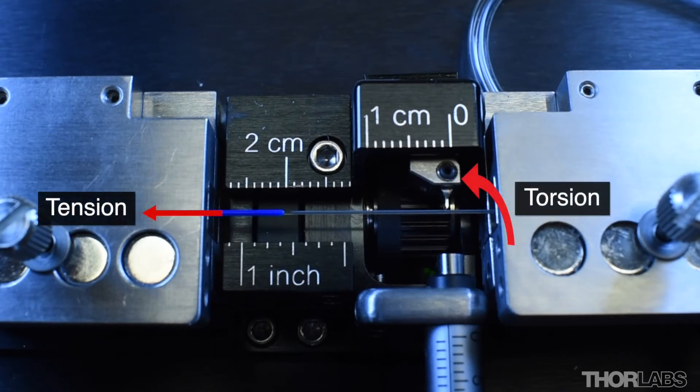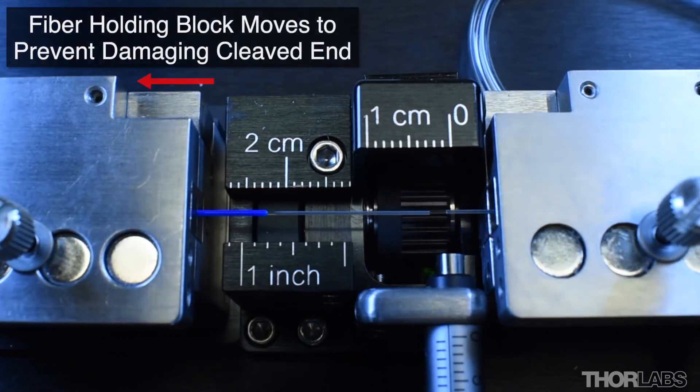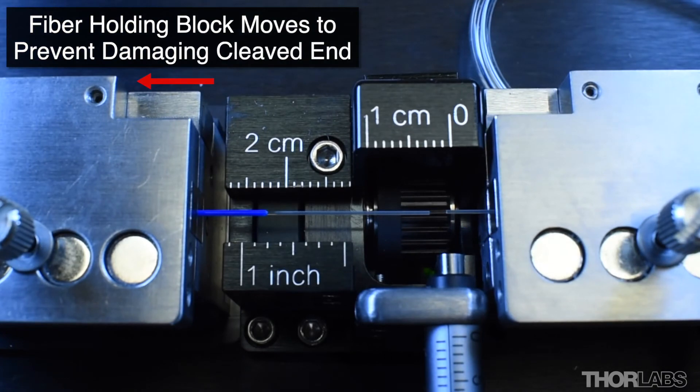The combination of the axial and torsional stress means that when the blade strikes the fiber, the scribe mark will propagate through the fiber, producing an angled cleave.